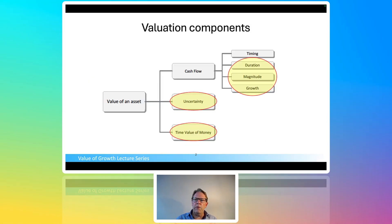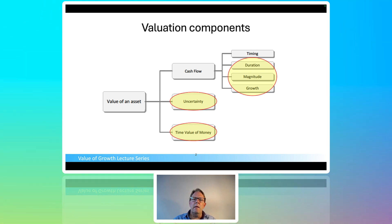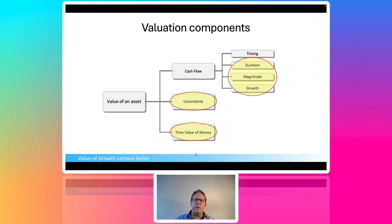In the first of the videos, two videos ago, I talked about the value of an asset or the value of a company, the value of a stock, is based on these set of metrics, these variables that boil down to cash flow. And cash flow has three subcomponents: duration, magnitude, and growth. And then for the discounting part, we deal with both uncertainty and the time value of money.